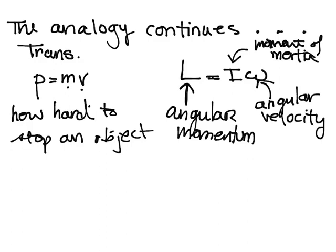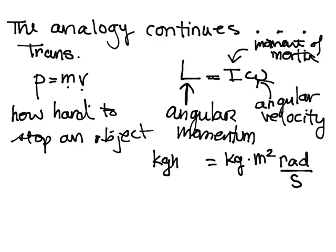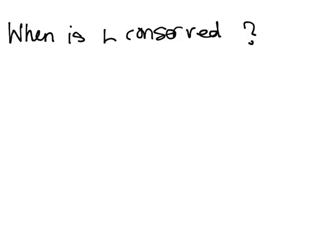Let's think about the units. I is in units of kilograms times meters squared, and omega is in units of radians per second — radians being our magical disappearing unit. So we have kilograms meters squared per second. Angular momentum, like normal momentum, has the unit of kg·m²/s.